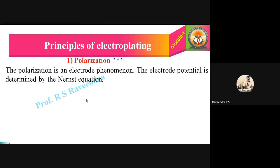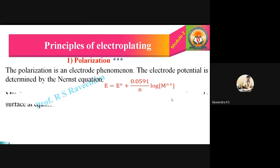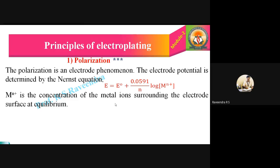Already in the previous modules, we had studied the meaning of electrode potentials, the definition of electrode potentials, various concepts with respect to the electrode phenomenon, and the electrode potential is determined by the Nernst equation. We also studied the Nernst equation derivation and many numericals in the previous videos. The equation is E = E° + (0.0591 / n) × log[Mn+], where Mn+ is the concentration of metal ions surrounding the electrode surface at equilibrium.